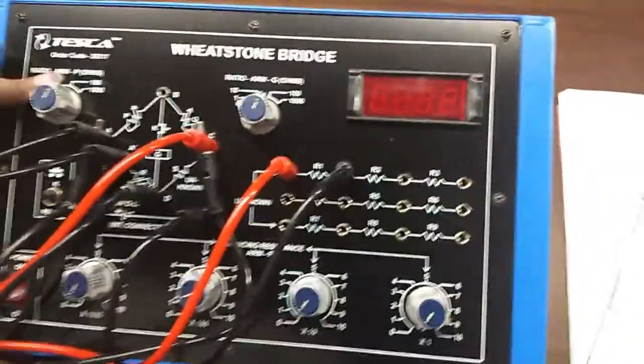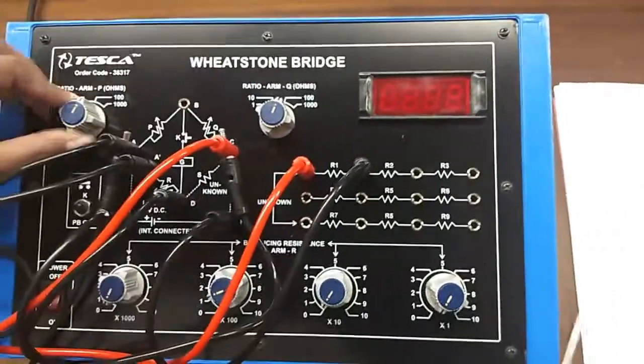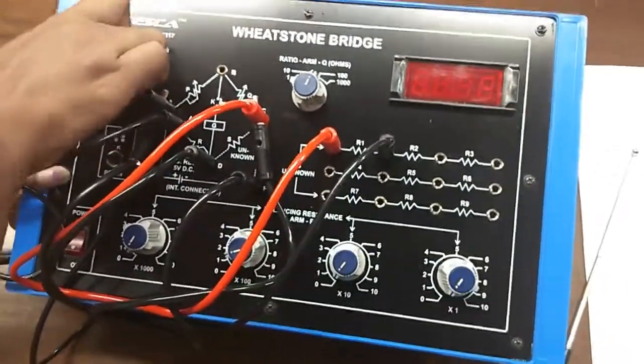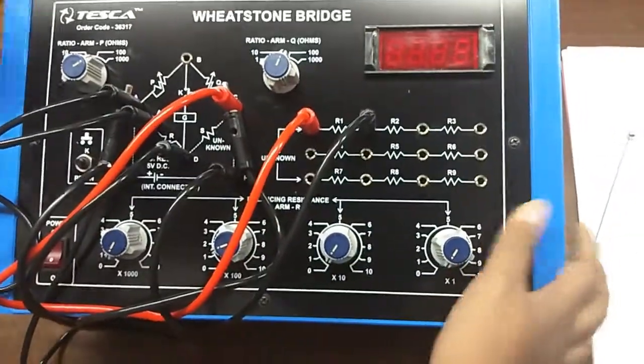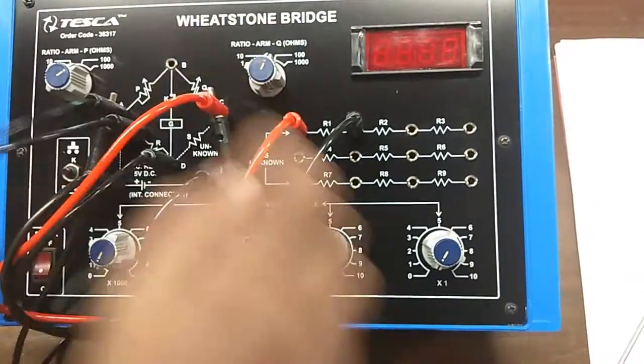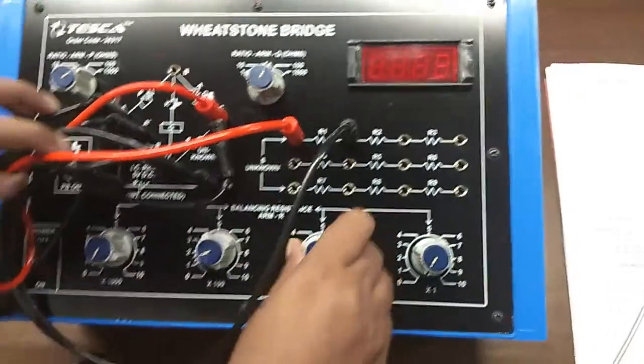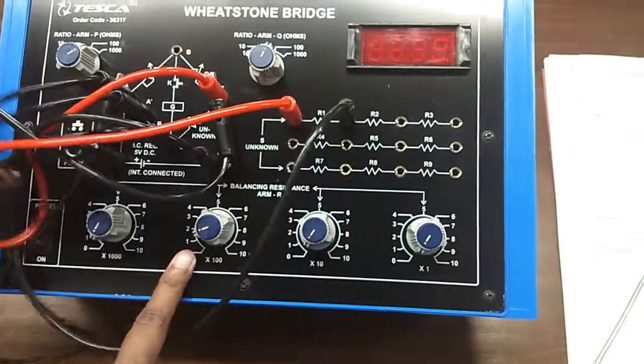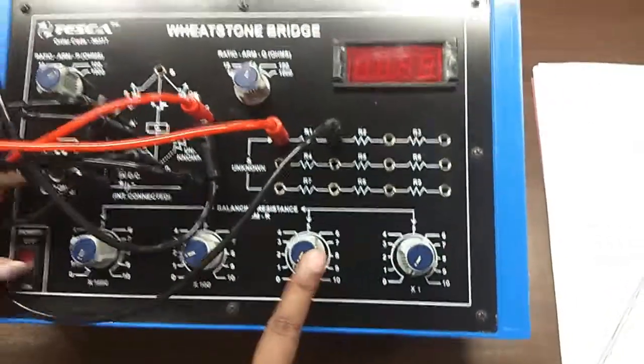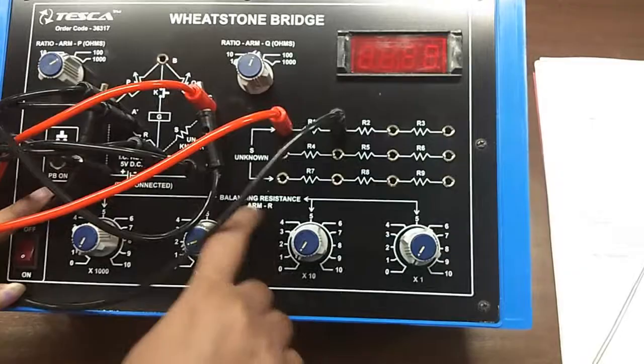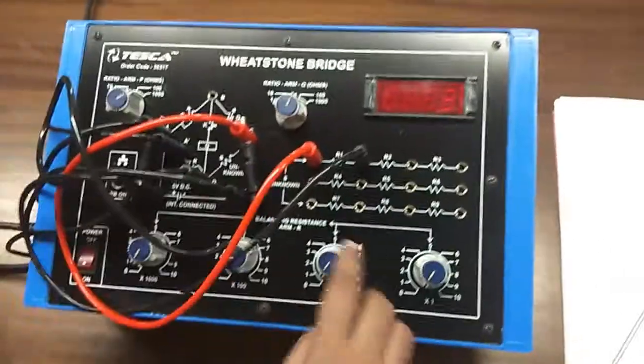First we will put our ratio arm P at 1000. This is 1000. Now, we will put Q at 100 and we will set this balancing resistance arm R to 100.